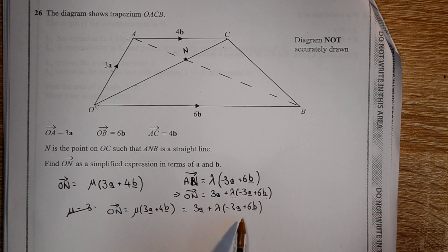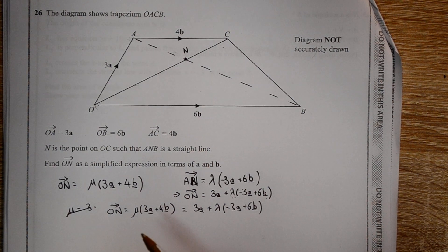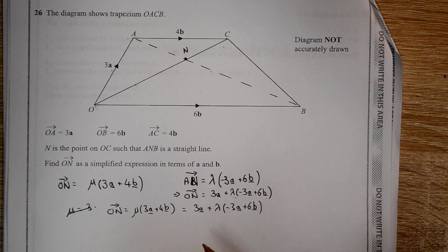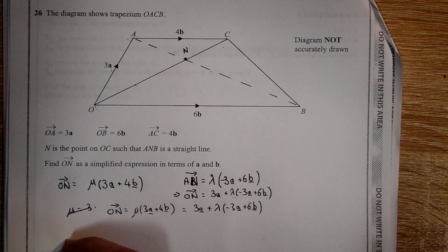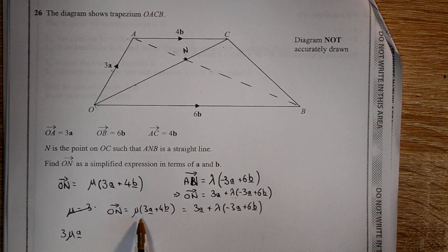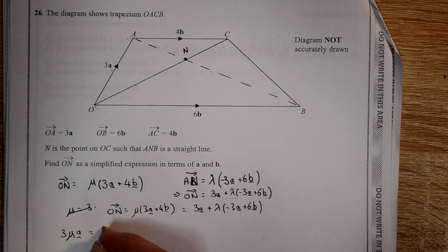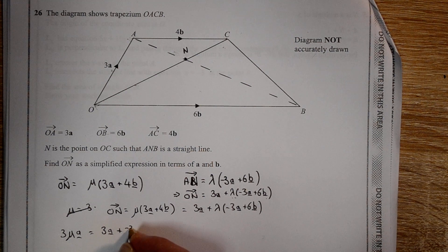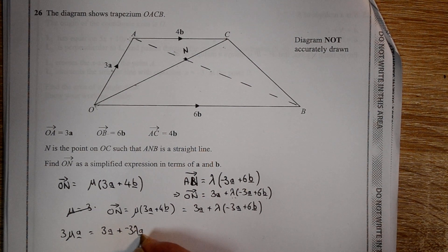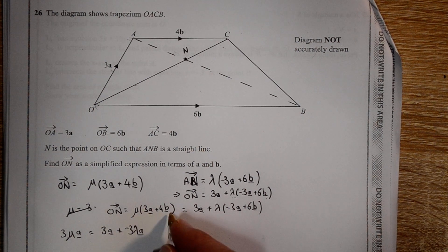Now if these two vectors are equal, and they are, then we can equate both the terms in A and the terms in B. So terms in A, we've got mu, 3mu A here, and that is equal to the A's on the right-hand side of the equation. We can also equate the B's. So on this side we've got...